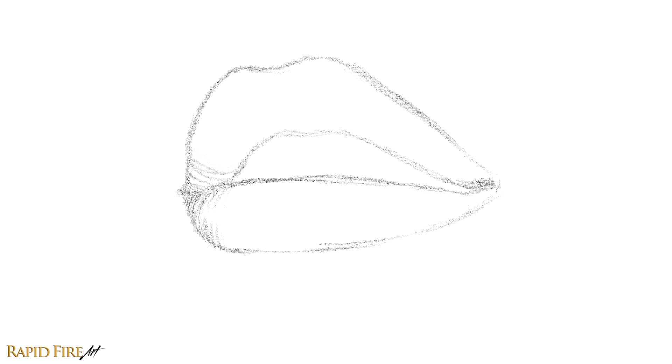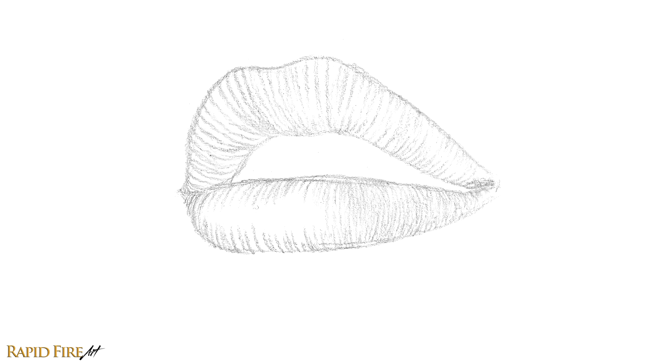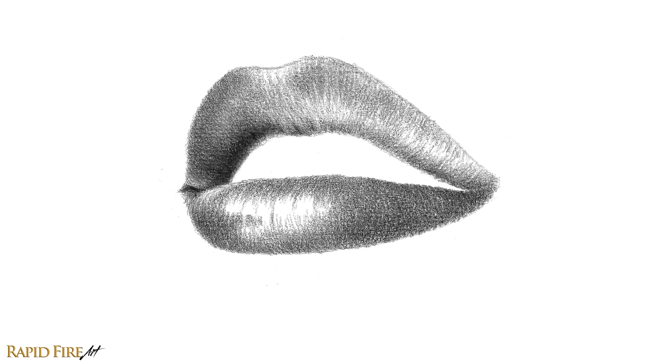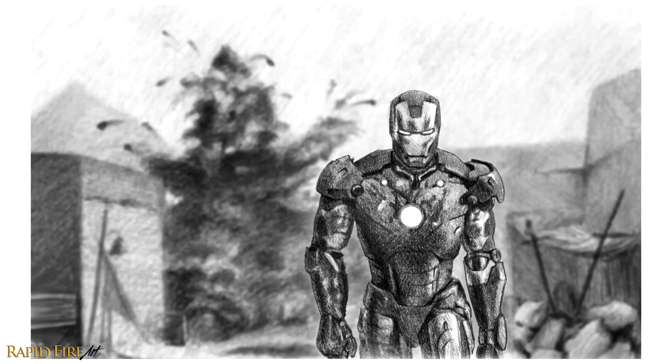Hey! I'm Darlene and you're watching a Rapid Fire Art tutorial. When you add light and shadow to your line drawings, you can make your subject come to life by creating the illusion of form and depth. You can make a flat line drawing jump right off the page.